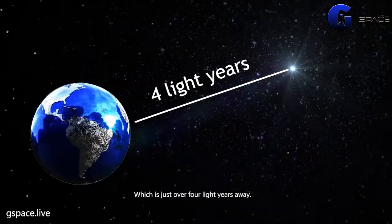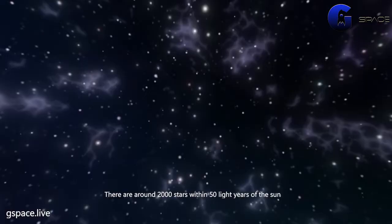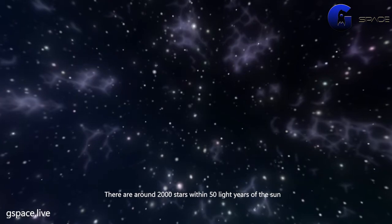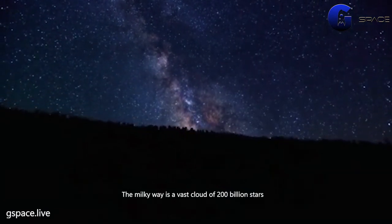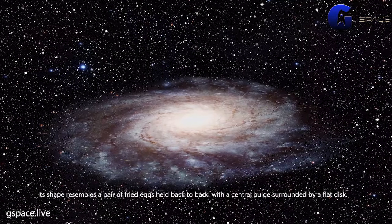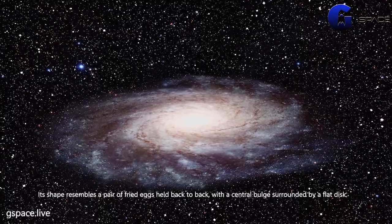Milky Way galaxy: the Milky Way is a vast cloud of 200 billion stars. Its shape resembles a pair of fried eggs held back to back, with a central bulge surrounded by a flat disk. Local group of galaxies: perhaps 7 trillion galaxies exist in groups called clusters, held together by gravity.